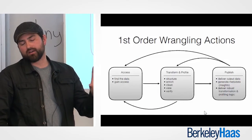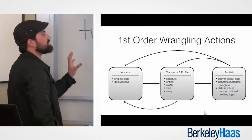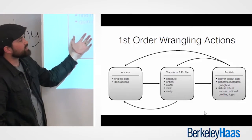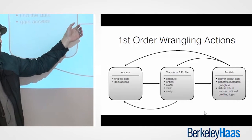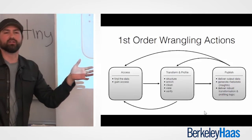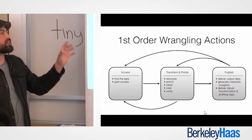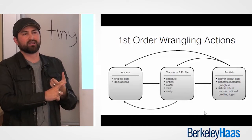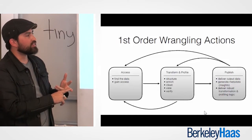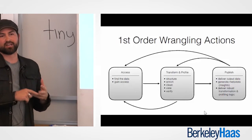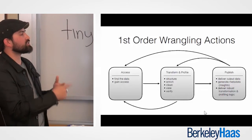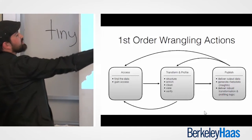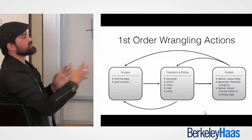Switching gears, I want to get into data wrangling or data preparation actions. We largely talk about three buckets with feedback cycles: accessing the data, then the actual transformation and profiling of that data, and then publishing whatever your output is. That output could be the data itself, the insights you generate out of the analysis, or the script you built to do the transformation — there are a lot of different kinds of things you might publish at the end of the cycle.